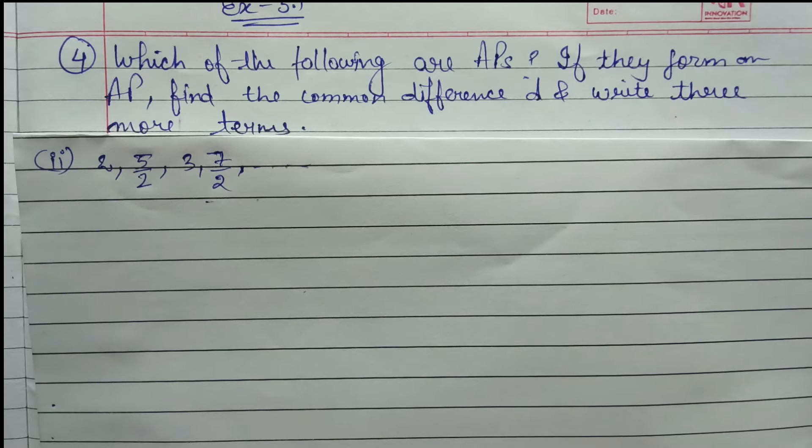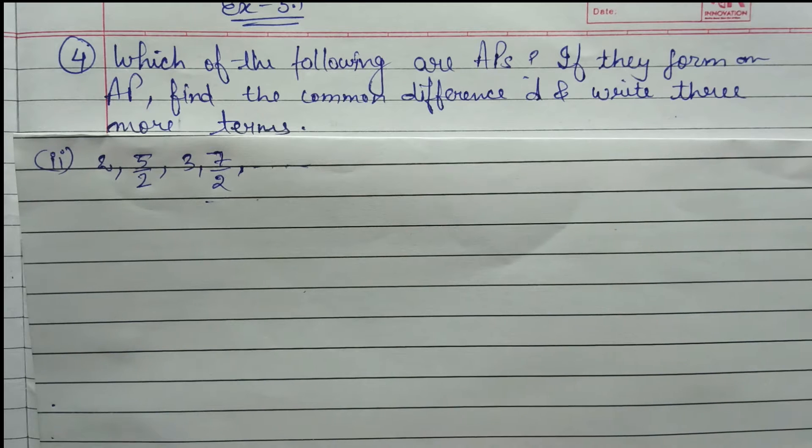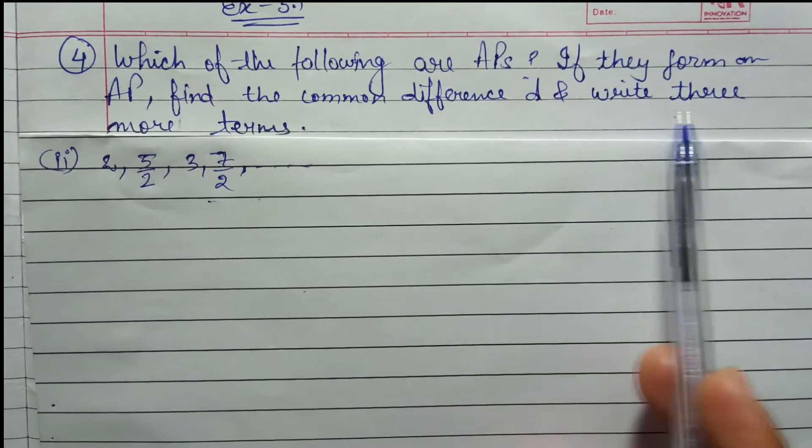We have a statement. Which of the following are APs? If they form AP, find the common difference D and write three more terms. Look, 5.1 exercise in this question, we have a lot of sequences given below. First of all, we have to check whether they form AP or not. If they form AP, then we have to find the common difference and three more terms.